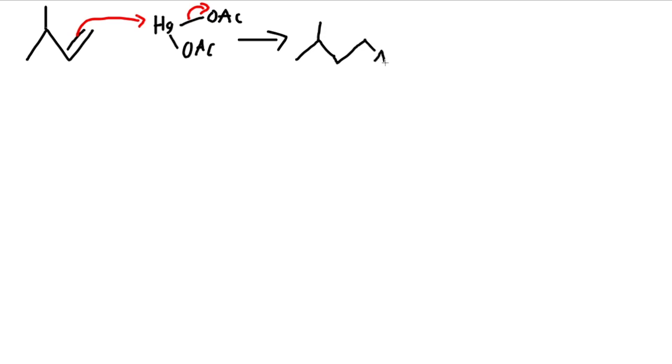Now the mercury with OAc goes on the less substituted carbon, the less substituted carbon. It has one lone pair, and there is a positive charge on that carbon. It attacks that carbon with a positive charge, goes and forms a cyclic ring, double mercurinium ring.